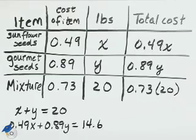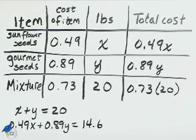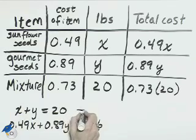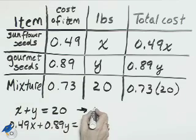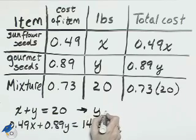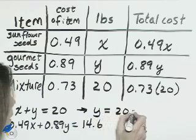Since we have two equations with two variables, we can solve this either by substitution or addition. If we go with substitution, I'll solve this first equation for Y, subtracting X to the right. Y equals 20 minus X.